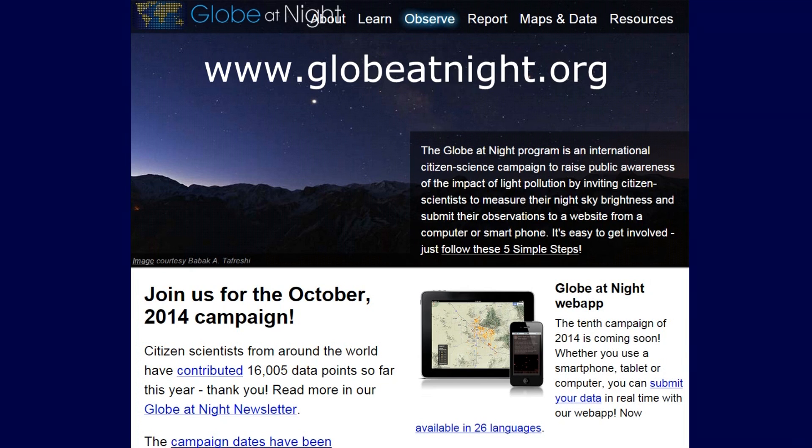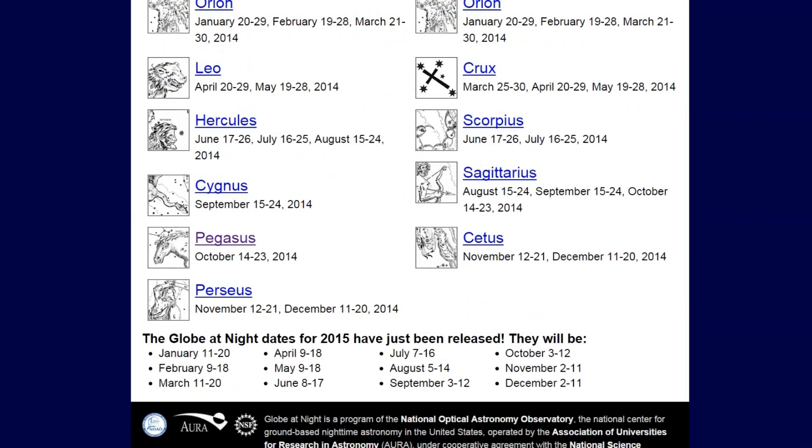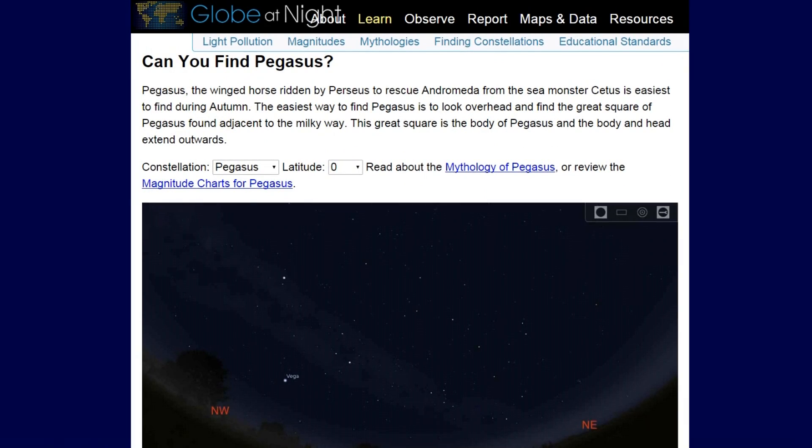Visit globeatnight.org, click on the Observe tab, then scroll down to the current month's constellation. For October, it's Pegasus. Easy to find and see, and easy to measure and submit observations. Do it this week.